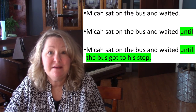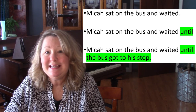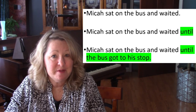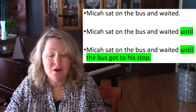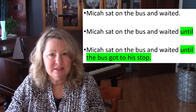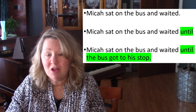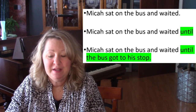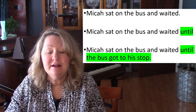Here's another example: 'Micah sat on the bus and waited.' Let's add a subordinating conjunction and you'll see how you're required to add more information to complete the thought. 'Micah sat on the bus and waited until...' — can't just leave it at that. So let's finish the subordinate clause: 'Micah sat on the bus and waited until the bus got to his stop.' Now, the nice thing about these three techniques is that you can combine them to make even longer sentences.